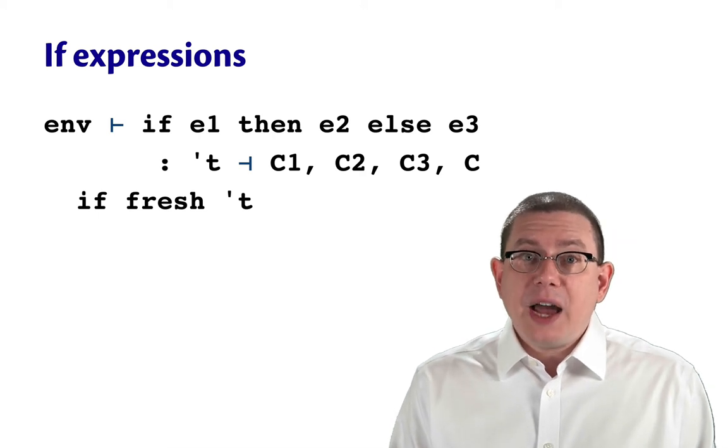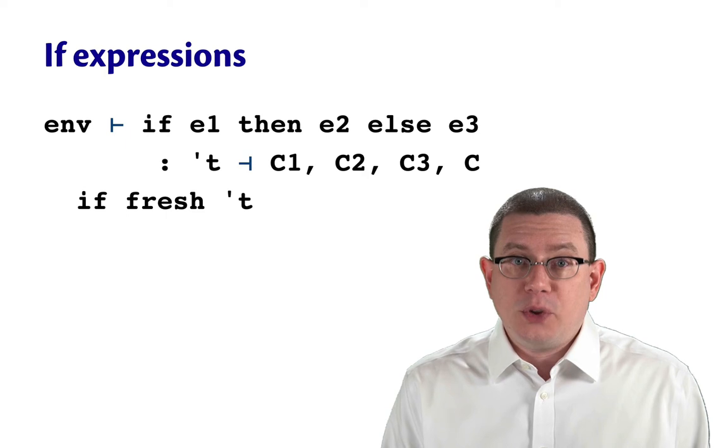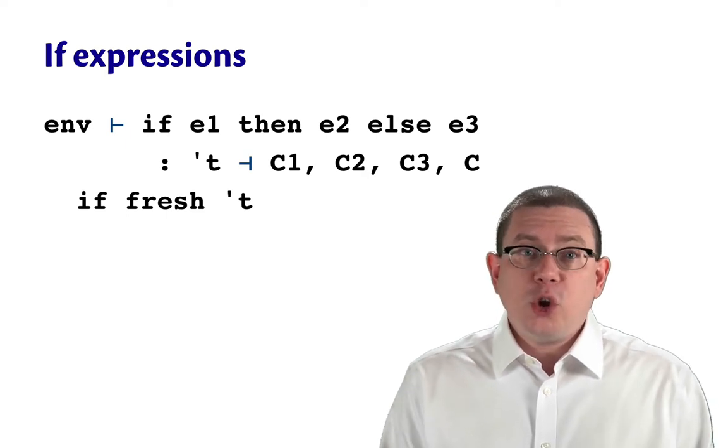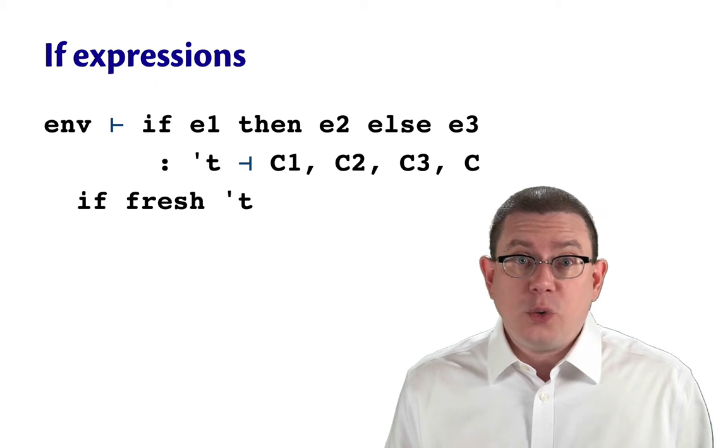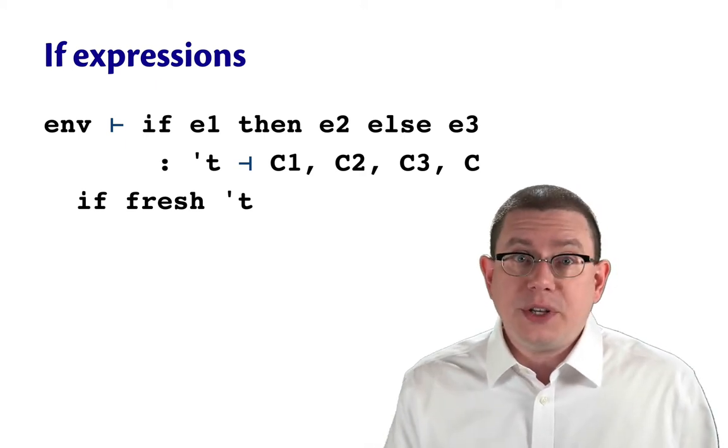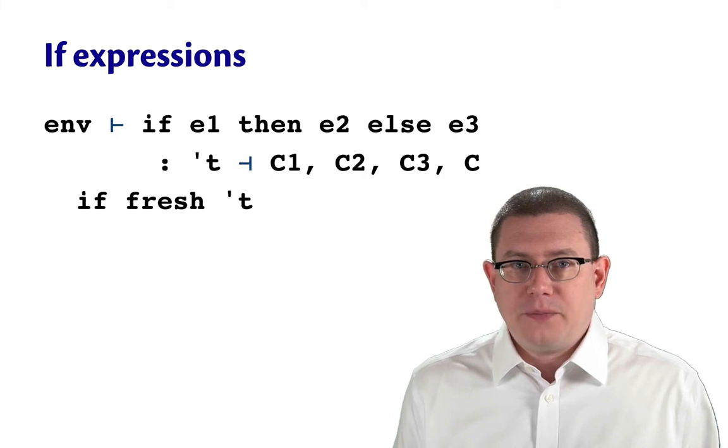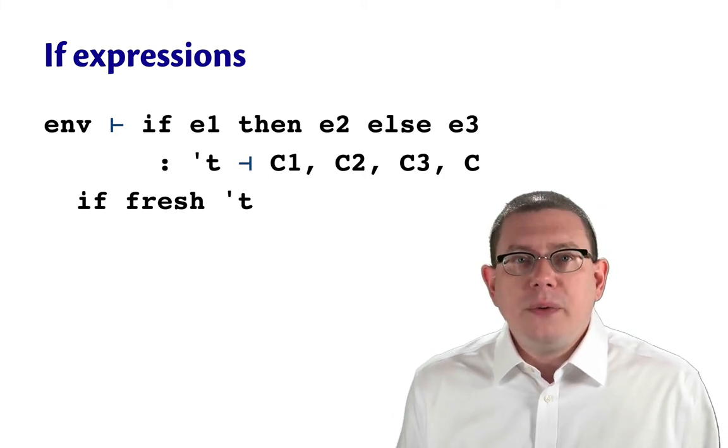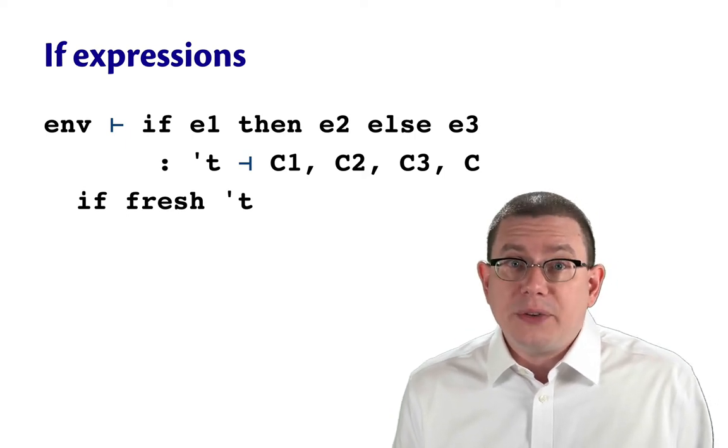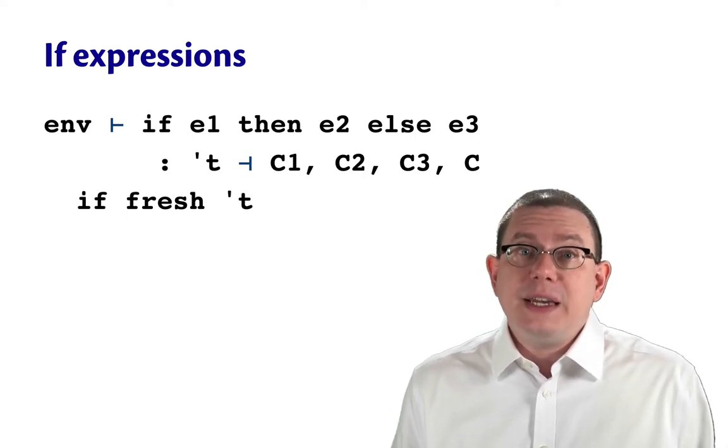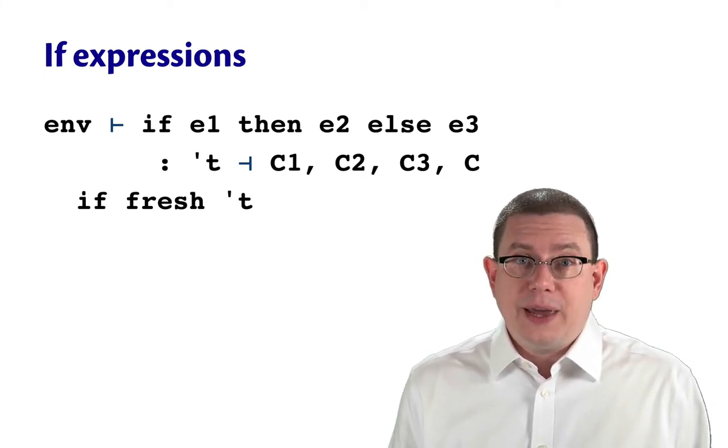The type of the entire if expression here is going to be inferred as just that new type variable tau. That's because looking at this syntactically, without descending into e1 or e2 or e3, without looking any deeper into those, we don't yet know what the type of this if expression should be. Now, of course, you and I both know that if we were to look deeper into e2 and e3, we could figure it out because the type of an if expression is the type of its then and else branches. But algorithmically, we can't do that yet.